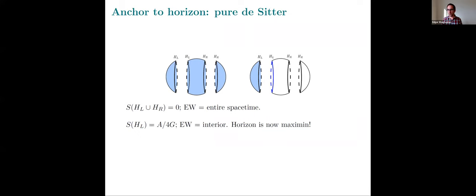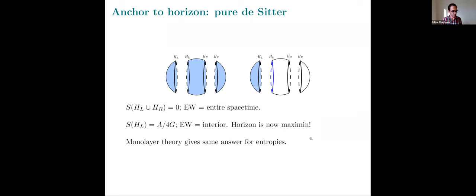The monolayer proposal gives the same answer for these basic examples. The reason is that every time I extremized to the interior I just got zero — both for the full entropy computation and for the single horizon computation. So numerically, the interior extremization didn't change the answer at all. The full answer came from the exterior extremization. So the two proposals give the same answer here.